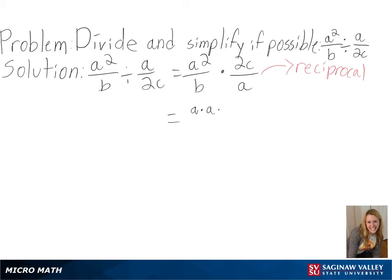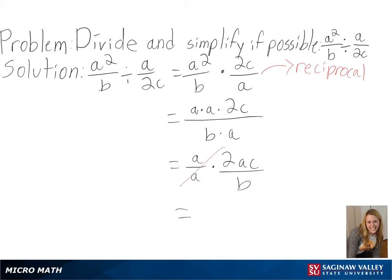We can then put this into simpler terms by writing a squared as a times a. Then we can simplify this, since a over a is equal to 1, and any number multiplied by 1 is itself. And since this cannot be further simplified, 2ac over b is our final answer.